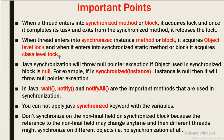These are the important points we must note. When a thread enters into a synchronized method or block, it acquires the lock, and once it completes the task and exits from the synchronized method, it releases the lock. When a thread enters into a synchronized instance method or block, it acquires the object-level lock. When it enters into a synchronized static method or block, it acquires the class-level lock. Java synchronization will throw a NullPointerException if the object used in a synchronized block is null.